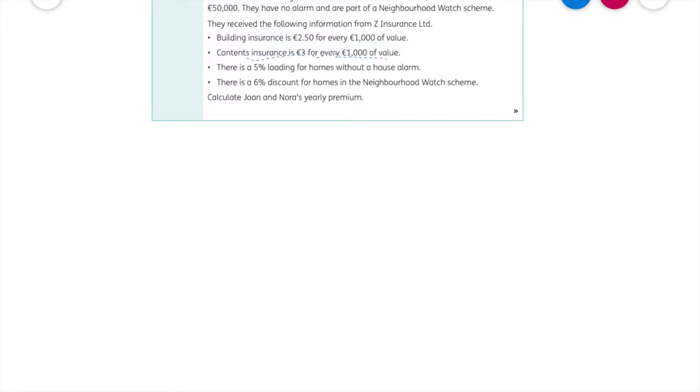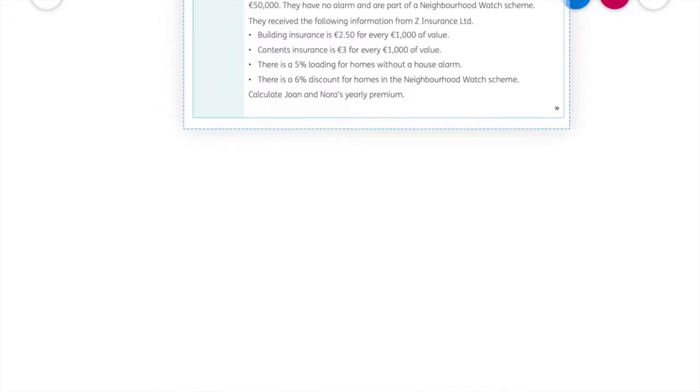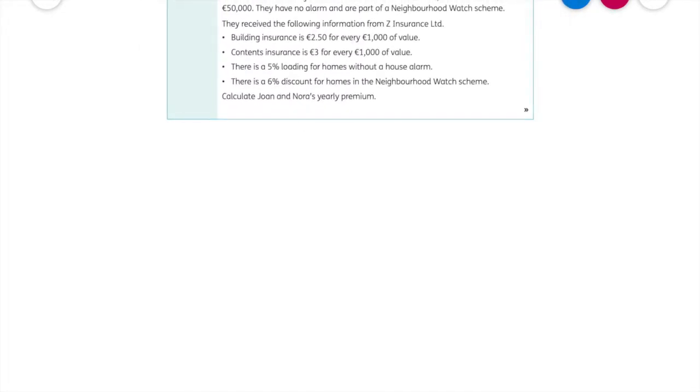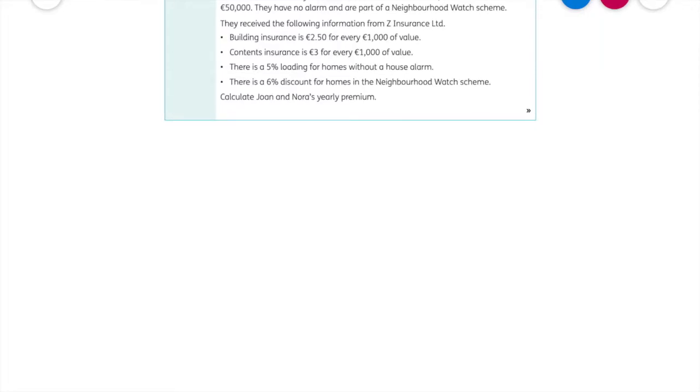They receive the information from Zed Insurance Limited. Their building insurance is going to be £2.50 for every £1,000 of value. Contents is £3 for every £1,000 of value. There's a 5% loading for homes without a house alarm. Loading is an extra charge applied to insurance. And then there's a 6% discount for homes with a neighborhood watch scheme. We're asked to calculate their yearly premium.